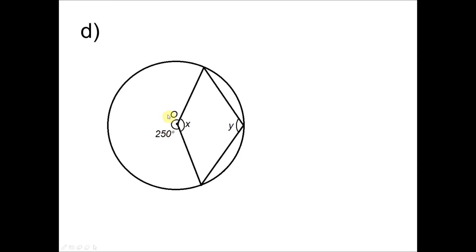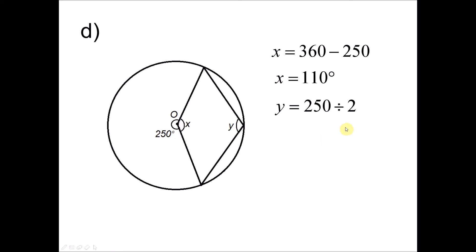Question 1D: To find X, this angle forms one whole turn, so X equals 360° minus 250°, giving X equals 110°. To find Y, it is the angle at the circumference subtended by the major arc, and 250° is the angle at the center subtended by the same major arc. Since the center angle is twice the circumference angle, Y equals 250 divided by 2, giving Y equals 125 degrees.